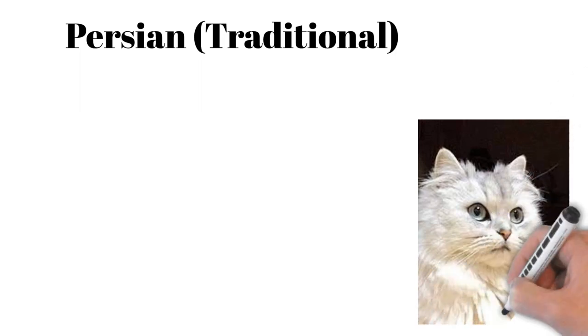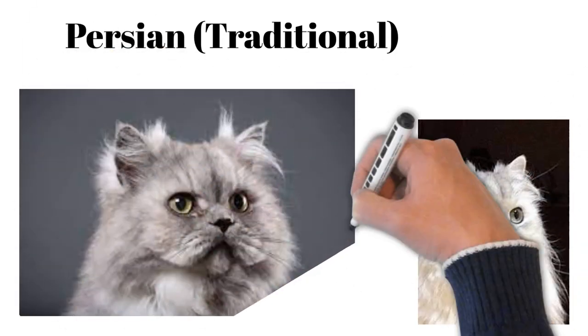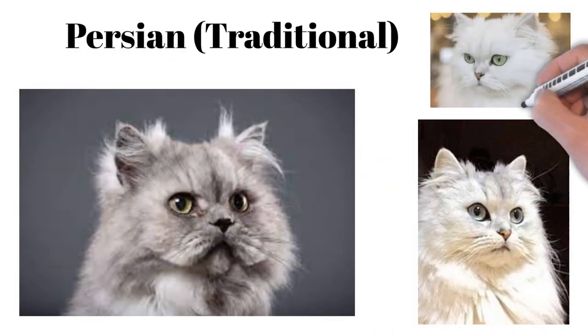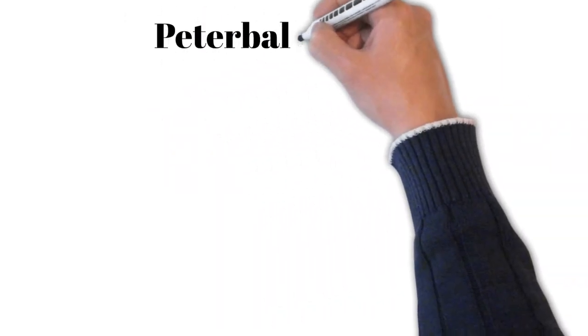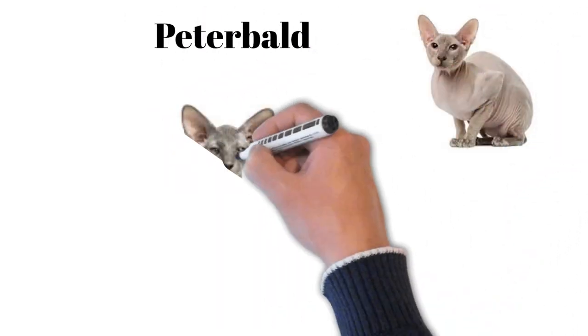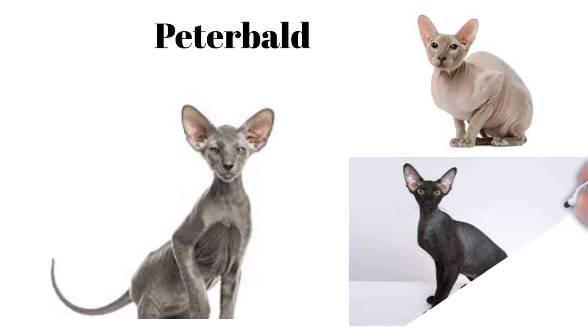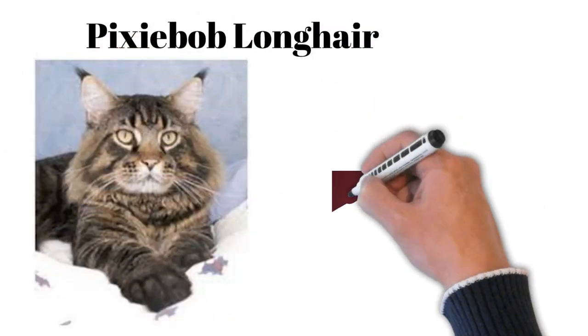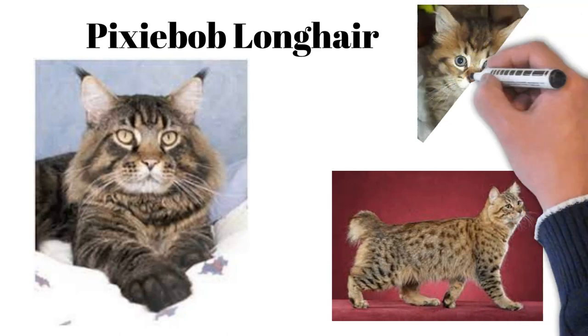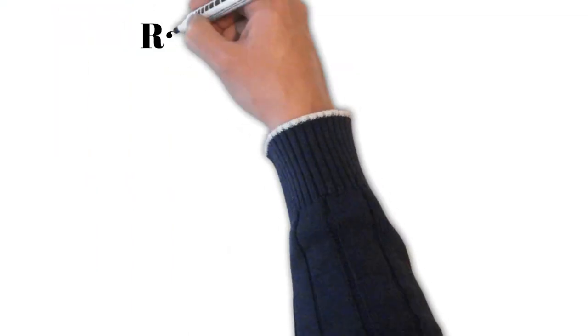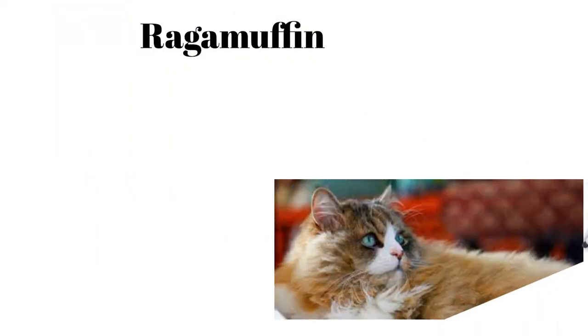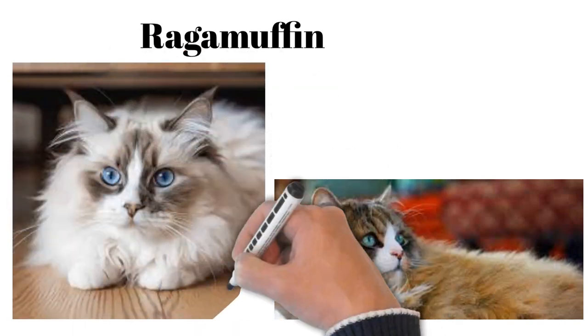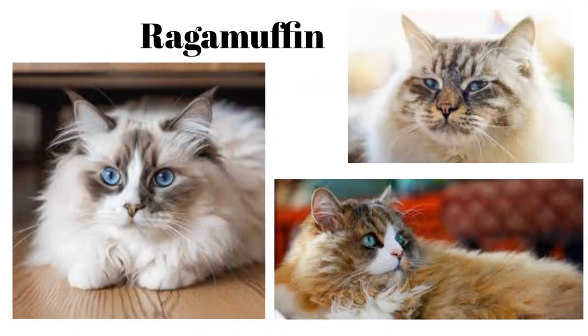Persian Traditional: long, luxurious coat, serene, enjoys quiet environments. Peterbald: hairless gene, elegant, affectionate, enjoys company. Pixie Bob Longhair: bobcat look, docile, enjoys family life, longer coat. Ragamuffin: large, affectionate, variety of colors, enjoys being held like a baby.